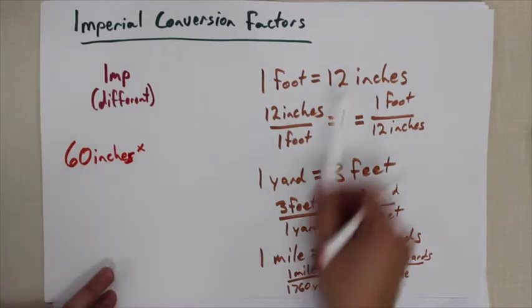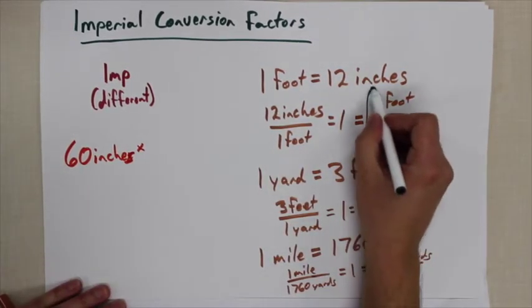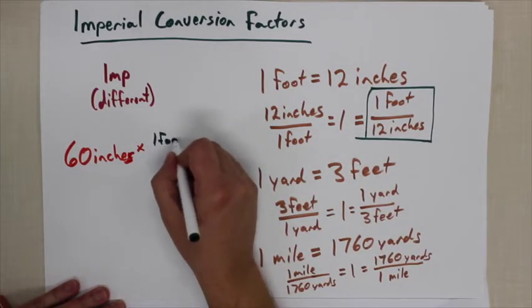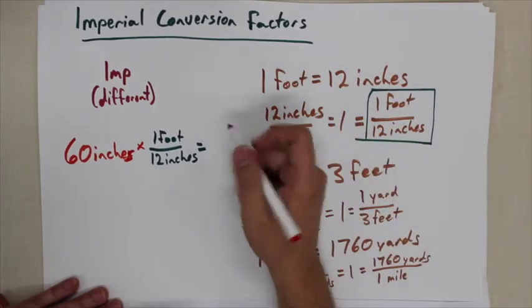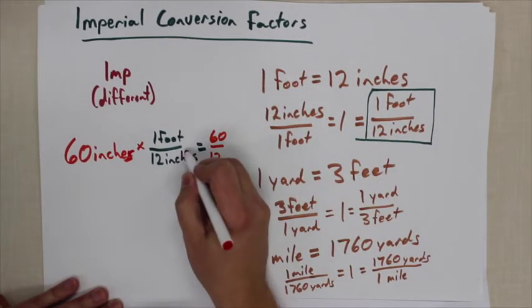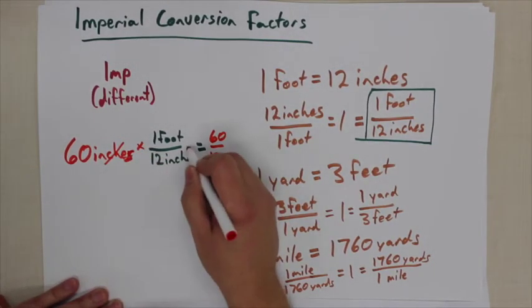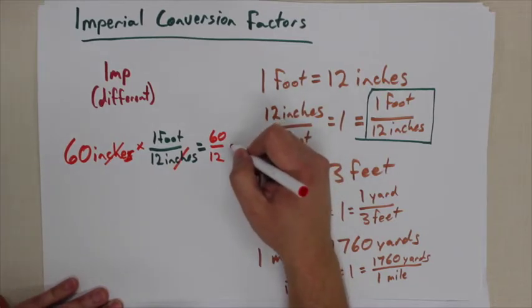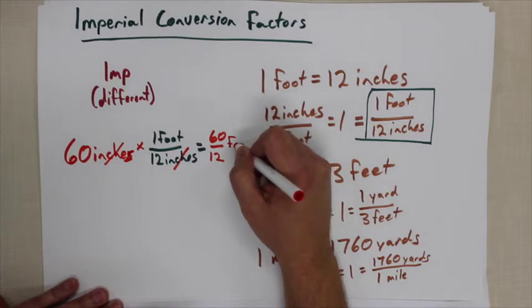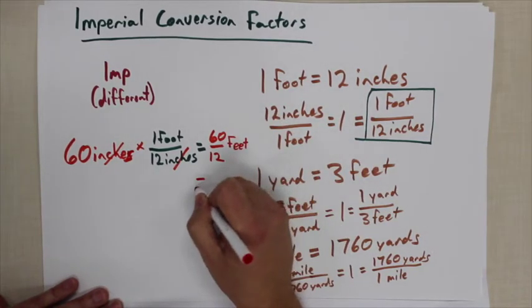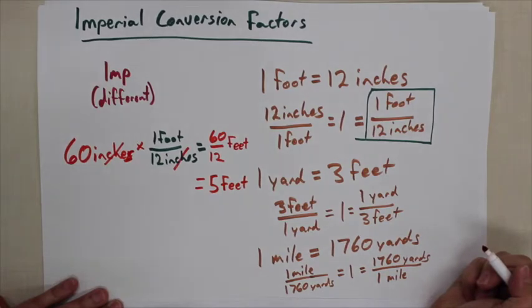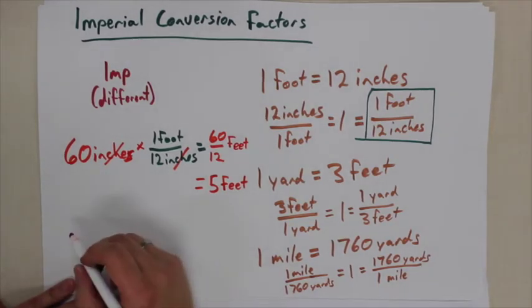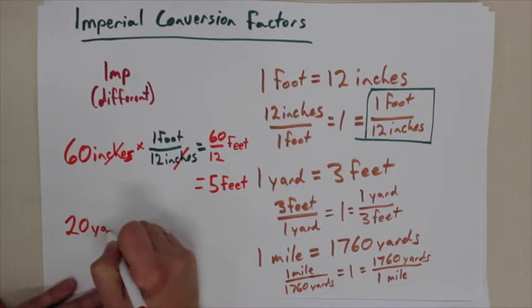For example, if I am 60 inches tall and want to convert to feet, I take the conversion factor 1 foot over 12 inches and multiply. The inches cancel out, leaving 60 over 12 feet, which equals 5 feet.